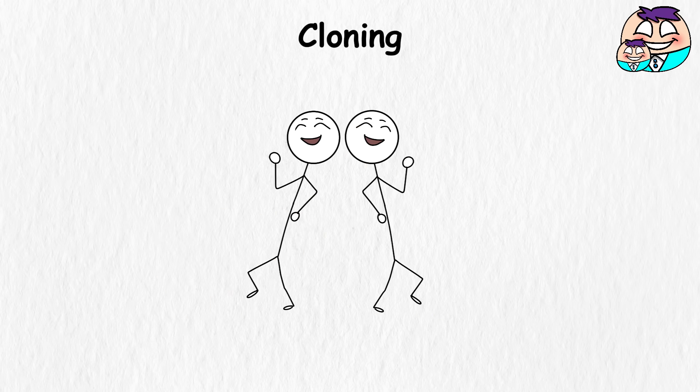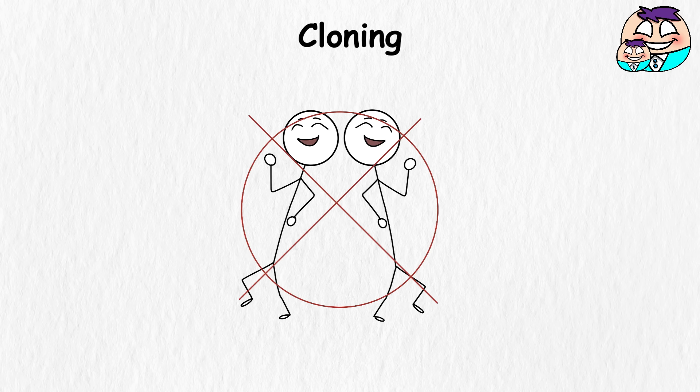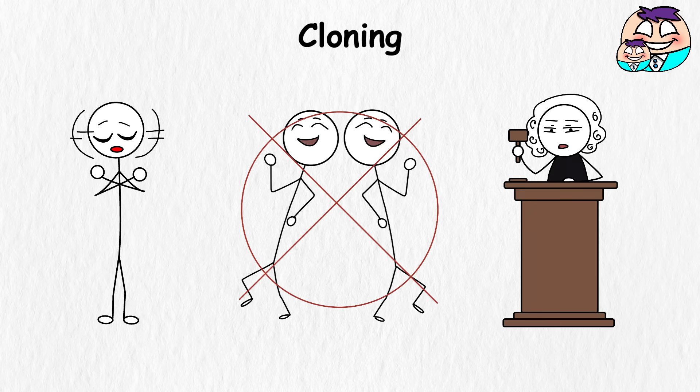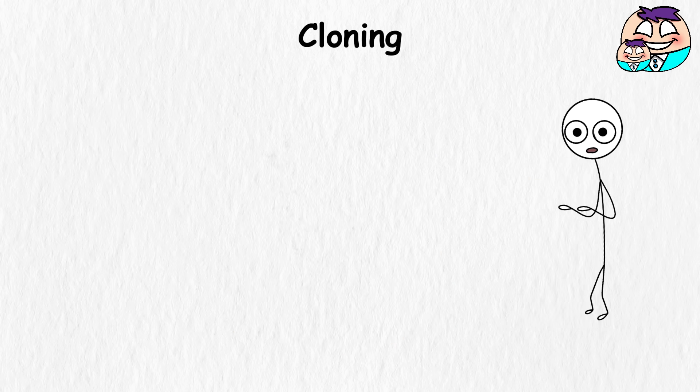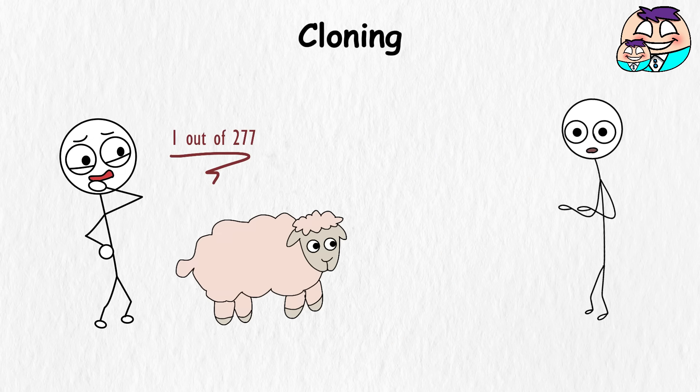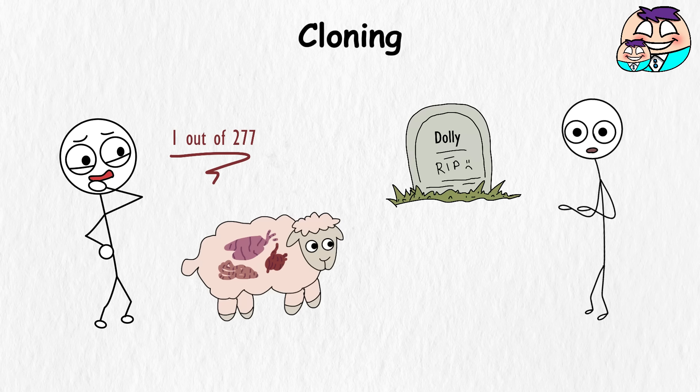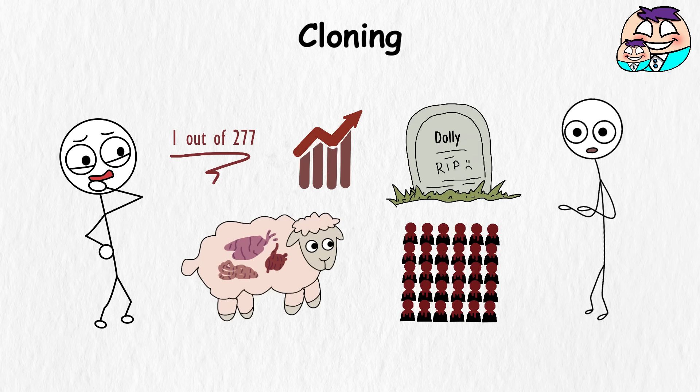The ethical, legal, and technical issues surrounding human cloning are a tangled mess. On a practical level, cloning isn't always effective. Dolly was one out of 277 attempts, and even she had health issues which led to her premature death. For humans, this high failure rate would be devastating. Imagine hundreds of copies of yourself dying before they create a single healthy copy of you.